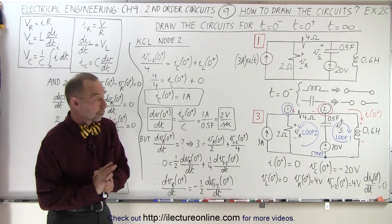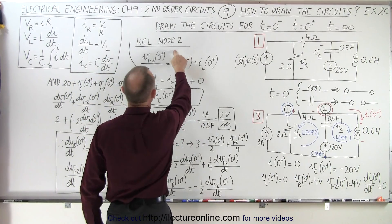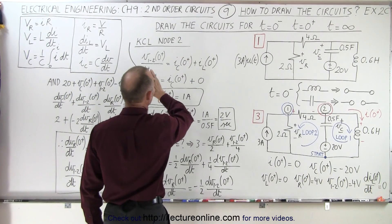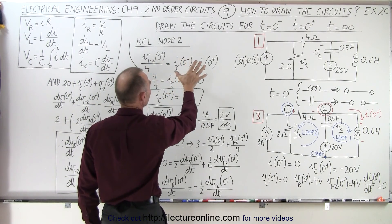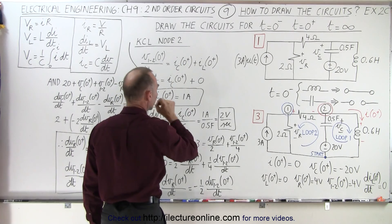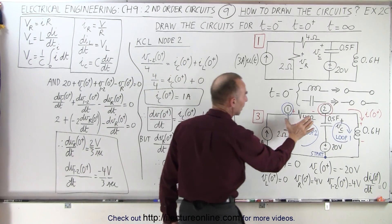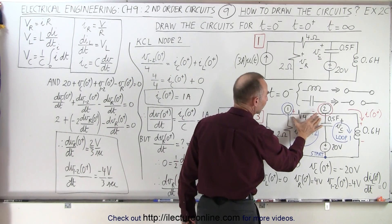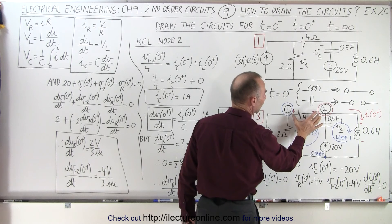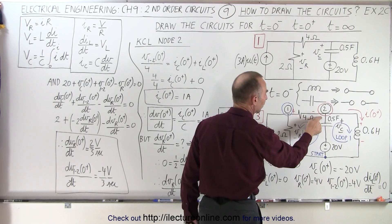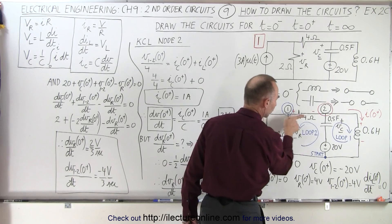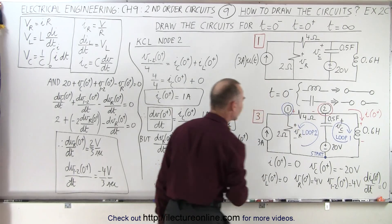We'll start at node 2 and add up all the currents entering the node and all the currents leaving the node. The current entering the node is going to come from this 4 ohm resistor. We have a voltage across here — the voltage is higher here compared to here, so the current is going to flow in this direction.